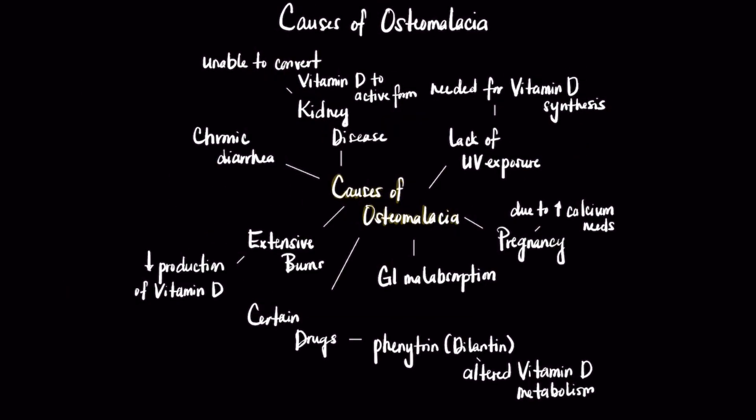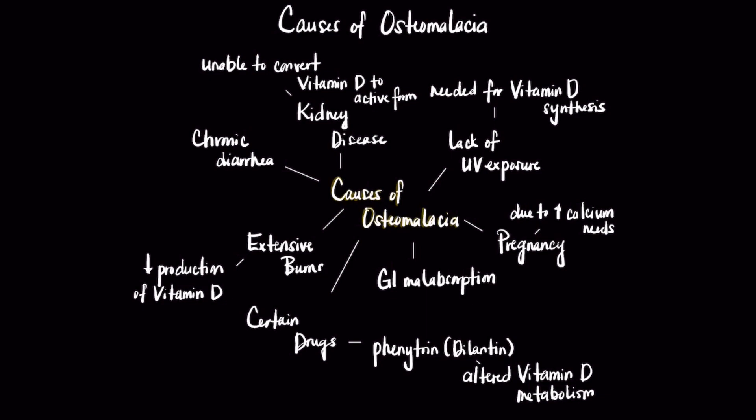This chart illustrates the causes of osteomalacia and we'll go through each one. A lack of UV exposure leads to osteomalacia since sunlight is needed for the synthesis of vitamin D. Kidney disease can also be a factor, as any abnormalities with the kidney can lead to the inability to convert vitamin D to its active form.